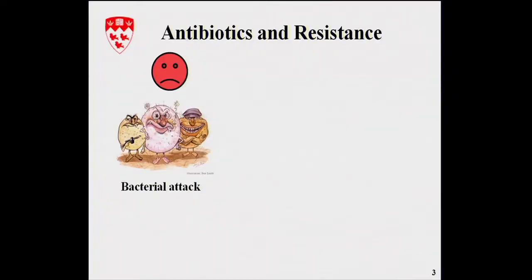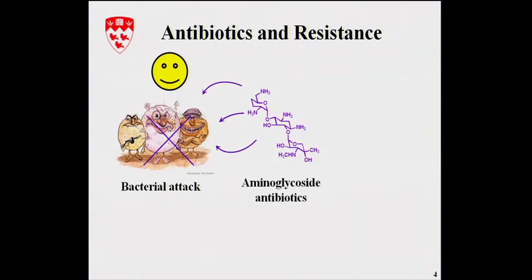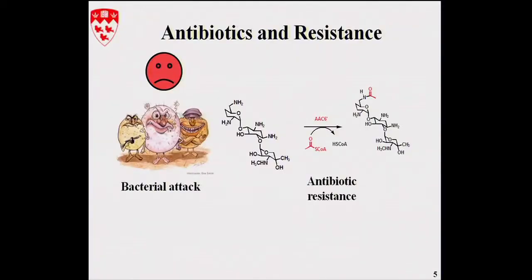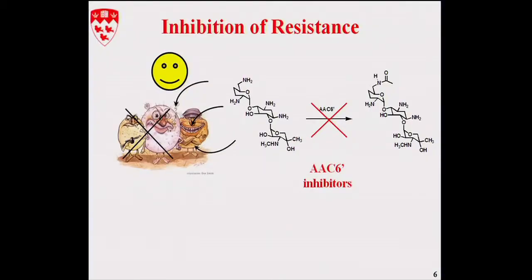I'll first talk to you about antibiotics and resistance. As you may know, bacteria can be very beneficial to us, but they can also make us very sick — sometimes even kill us. When that happens, you take an antibiotic, for example an aminoglycoside as shown here. Unfortunately, bacteria have evolved to become resistant to antibiotics. One way they do that is by expressing an enzyme that modifies the antibiotic to make it inactive — for example, acetylation of the aminoglycoside.